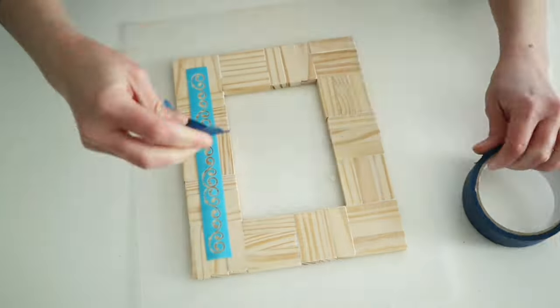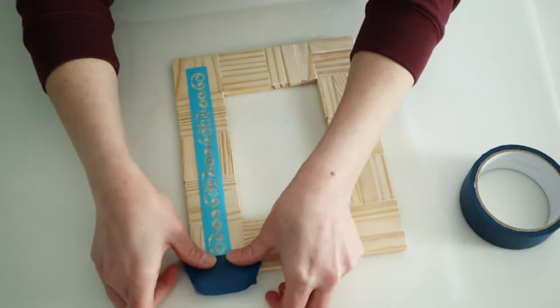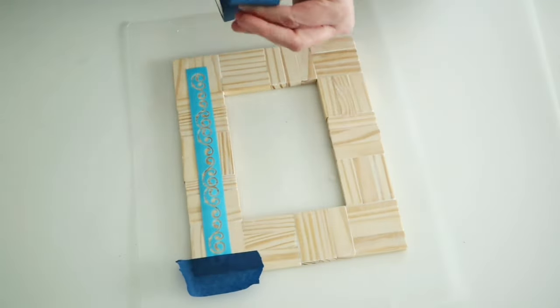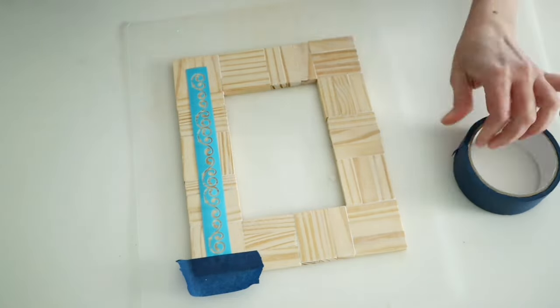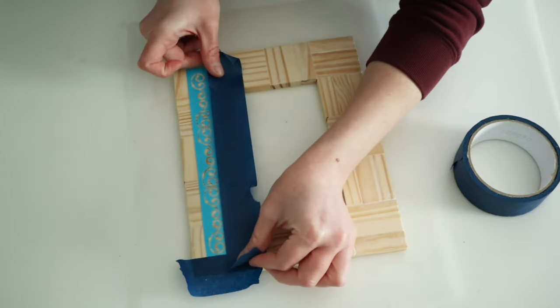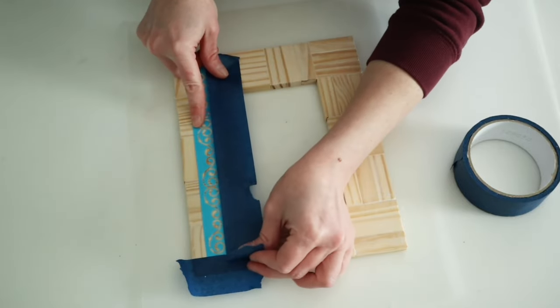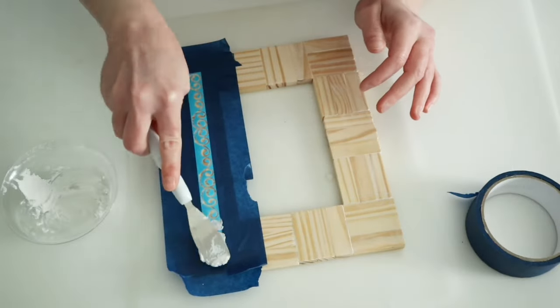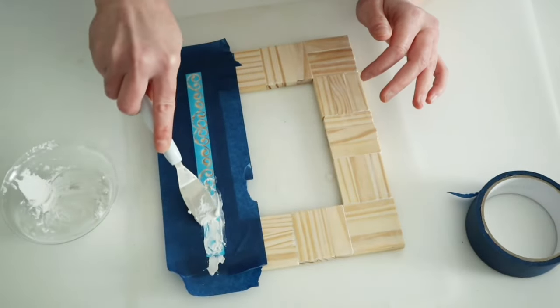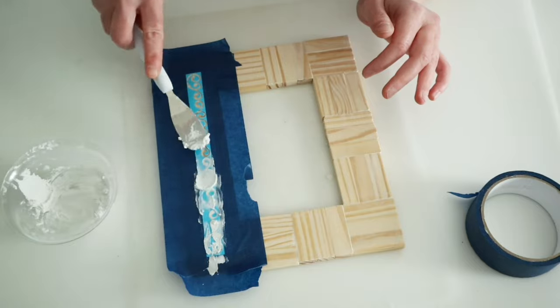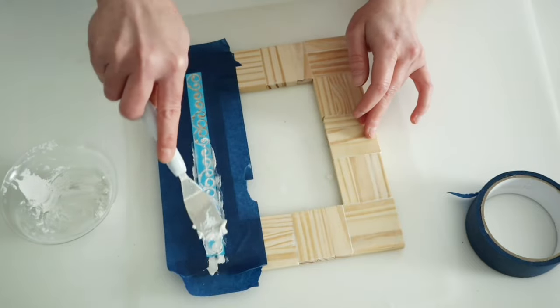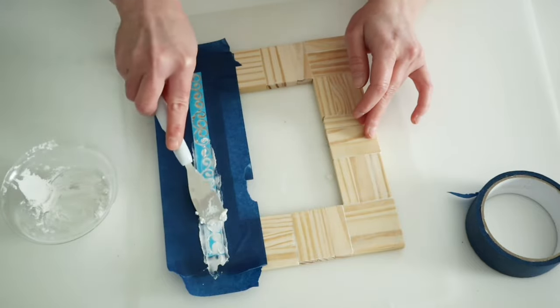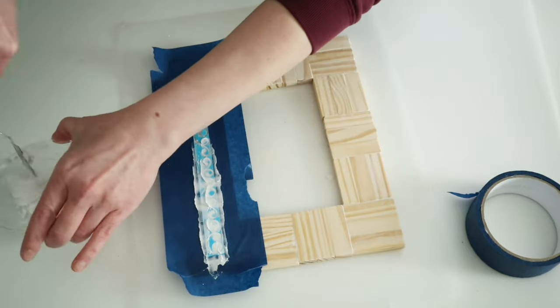And then because I was having so much fun stenciling stuff with the spackling, I decided to put a stencil on my frame as well. So again, I'm just using one of those Dollar Tree stencils, some painter's tape, and the leftover spackling that I had. And just like with the little plant stand slash stool that I made, I'm just going to use that spatula and put the spackling over top of my stencil.